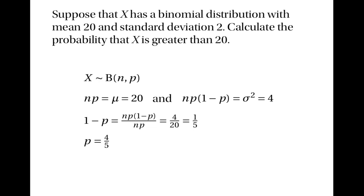It follows that p is 4/5. The next step is to work out n, and we can use a similar trick for that. Because n is equal to np divided by p, n is going to be the mean divided by p, which in this case is 20 divided by 4/5, and that is equal to 25. Now we know that x has the binomial distribution with 25 trials and 4/5 as the probability of success.